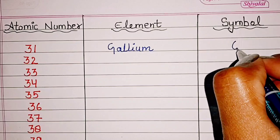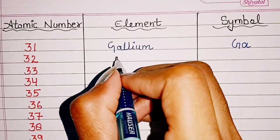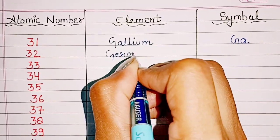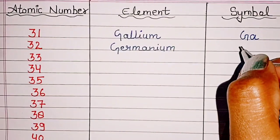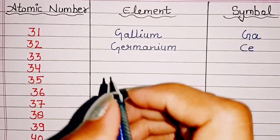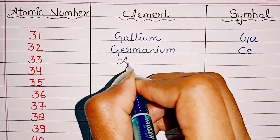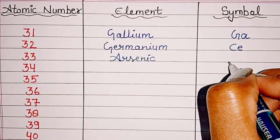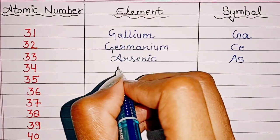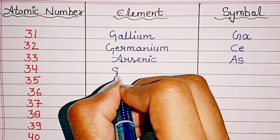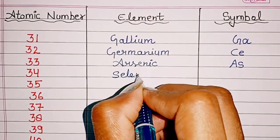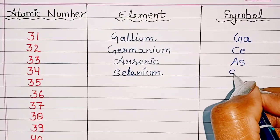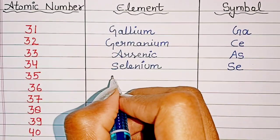32 is Germanium, symbol Ge. 33, Arsenic, symbol As.